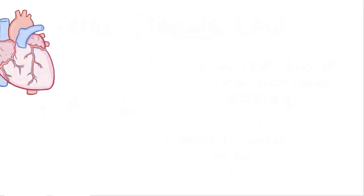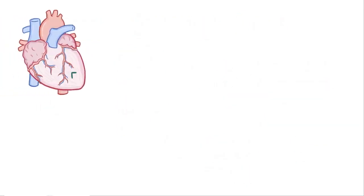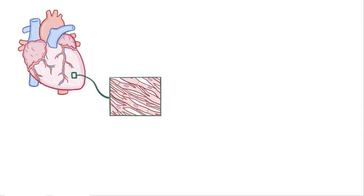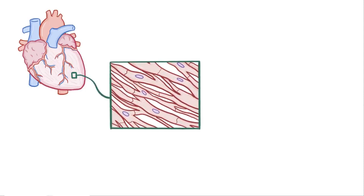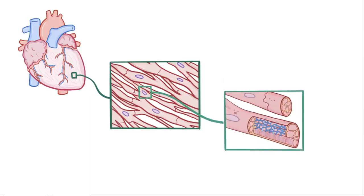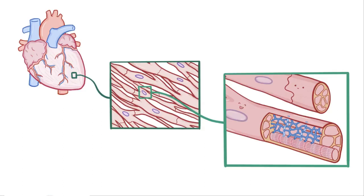To understand the relationship, let's zoom into the walls of the ventricles. The bulk of these walls is made up of short, branched cardiac muscle cells packed one next to the other. Zooming in further, if we look inside the muscle cells, we see bundles of myofibrils, or long chains of sarcomeres.